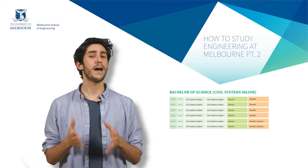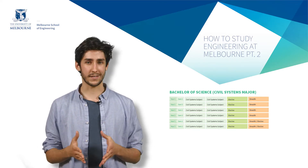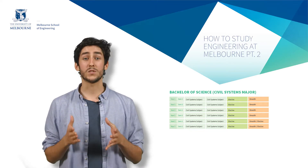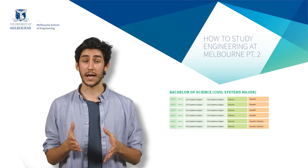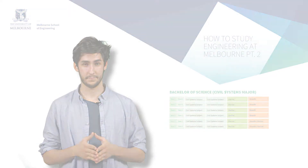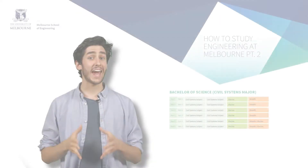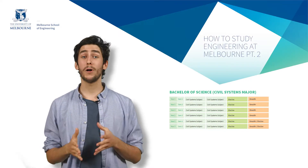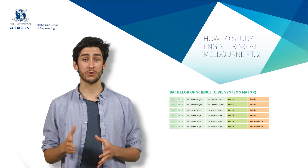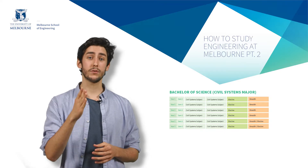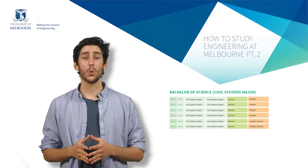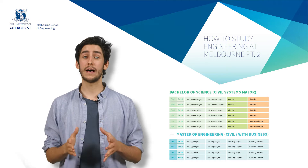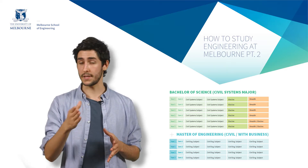Breadth subjects are a feature of our Melbourne degrees and enable you to gain a breadth of knowledge as well as specialising in your major. To gain a qualification in civil engineering, you would follow up your Bachelor of Science majoring in civil systems with the Master of Engineering Civil or the Master of Engineering Civil with Business.